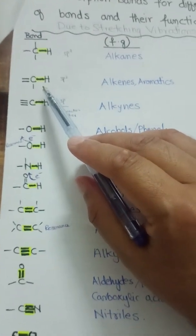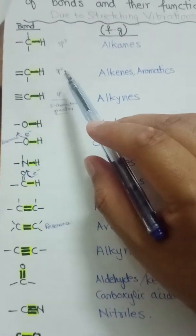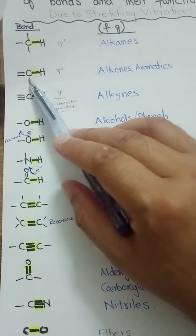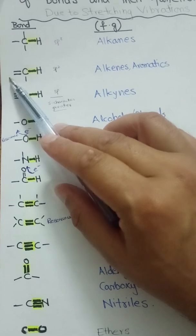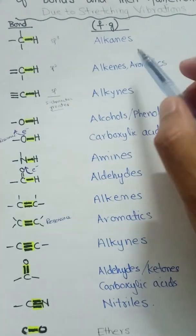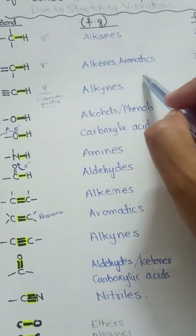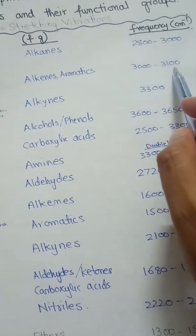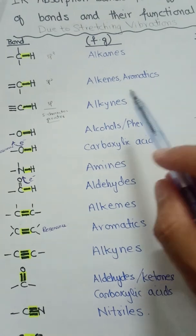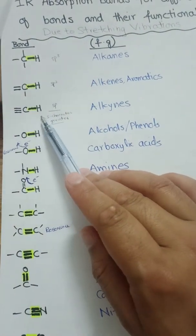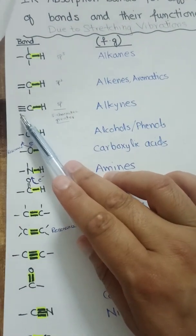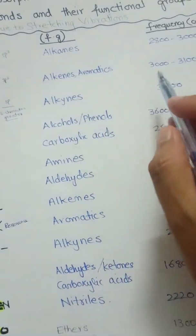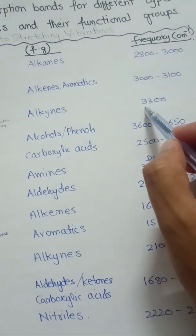For the C-H bond in alkenes or aromatic compounds where sp2 hybridization is present, the C-H stretching is from 3000 to 3100 per centimeter. For the C-H bond in alkynes where a triple bond is present, the sp-hybridized C-H stretching is at approximately 3300 per centimeter.